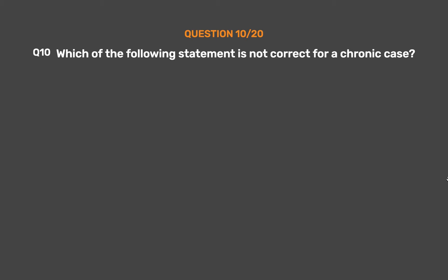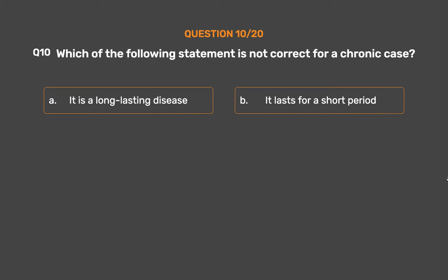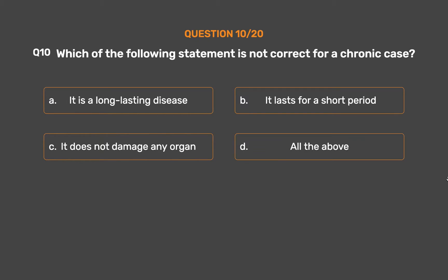Question number 10. Which of the following statements is not correct for a chronic disease? Option A: It is a long-lasting disease. Option B: It lasts for a short period. Option C: It does not damage any organ. Option D: All the above.